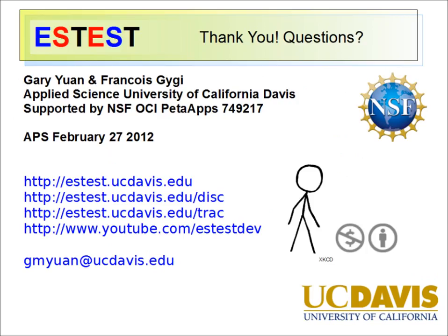To summarize, a network of distributed ES test servers has the potential to enhance the practice of electronic structure computation and further foster collaboration in this community. The comparison, verification, and post-processing capabilities of ES test are more useful for every server hosting interesting simulation data. I hope you will join an ES test server or consider hosting one yourself. Please go to our website estest.ucdavis.edu, and thank you for your attention.